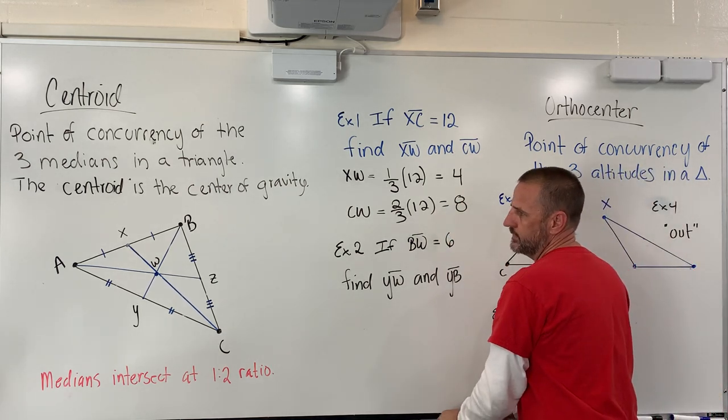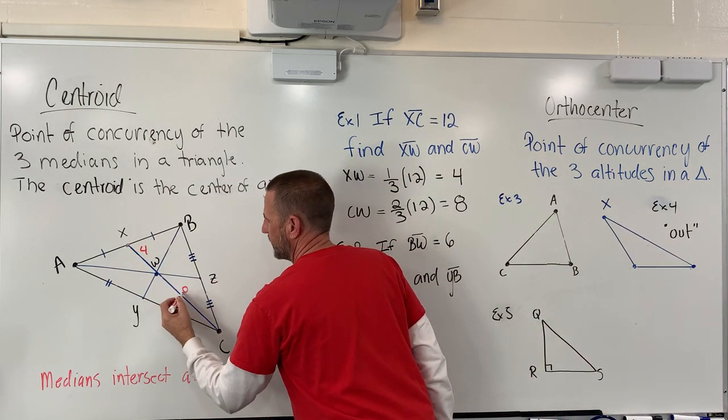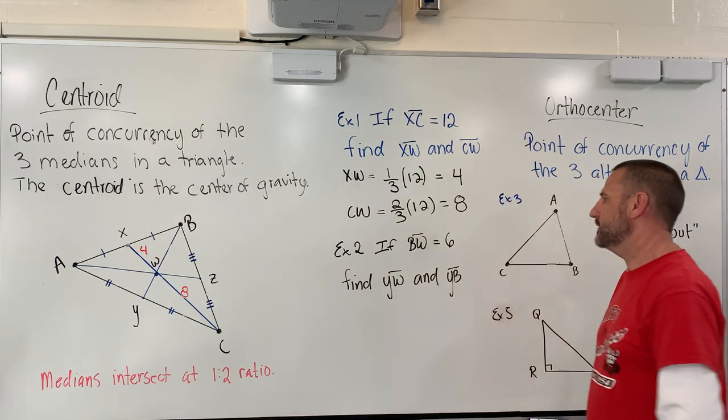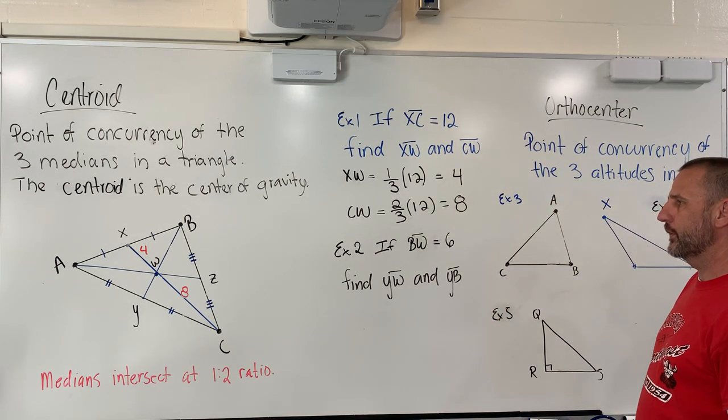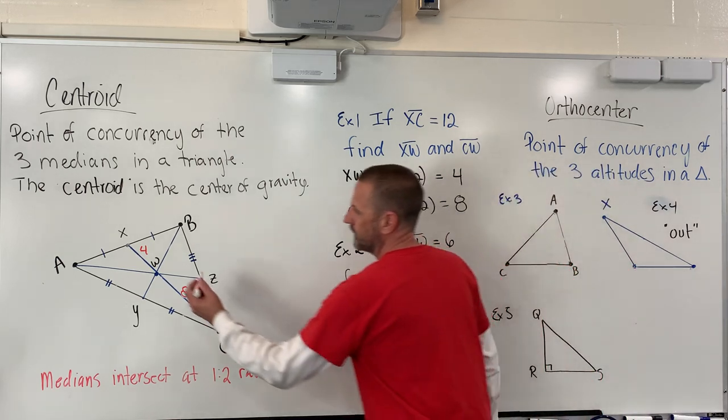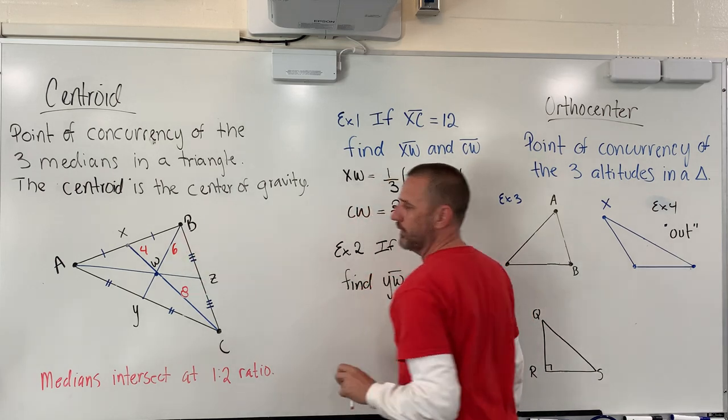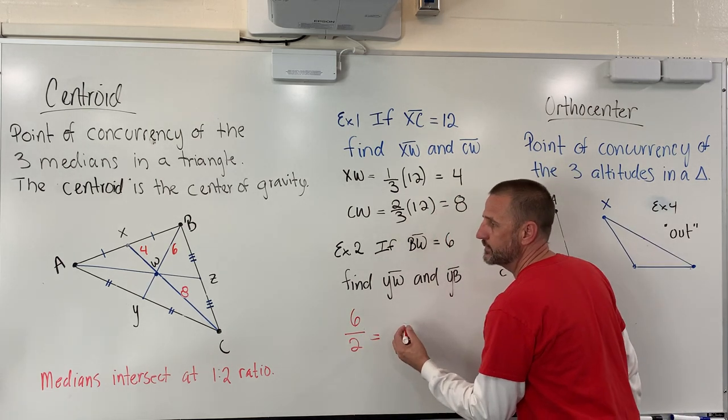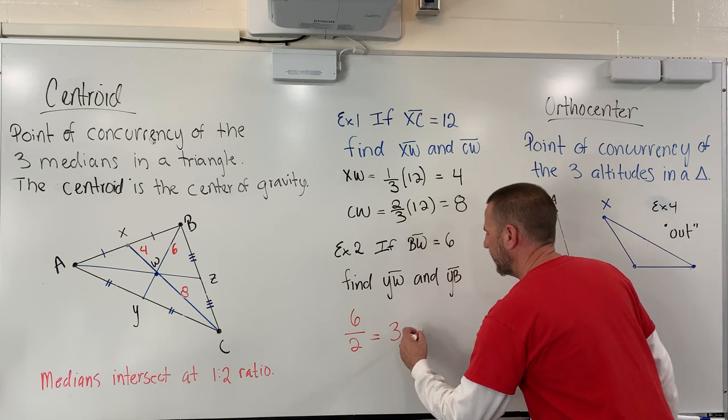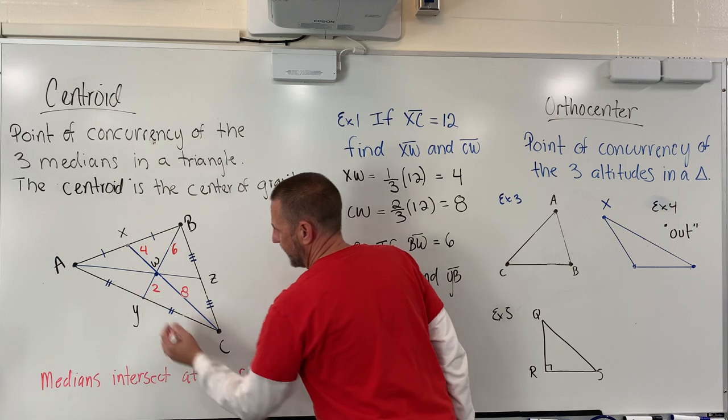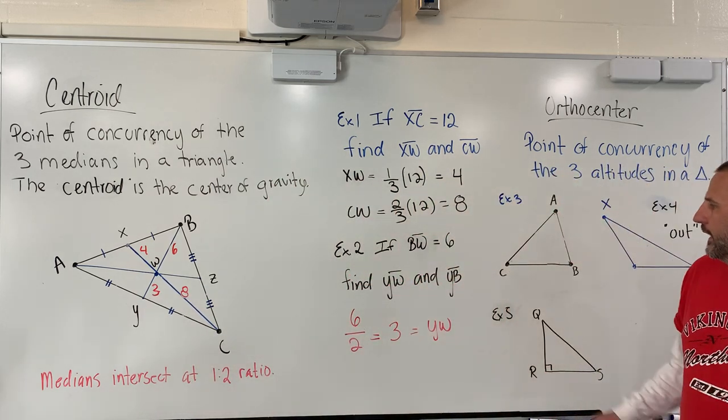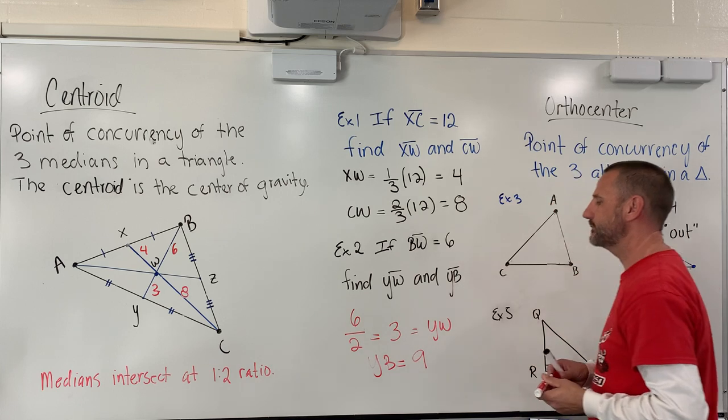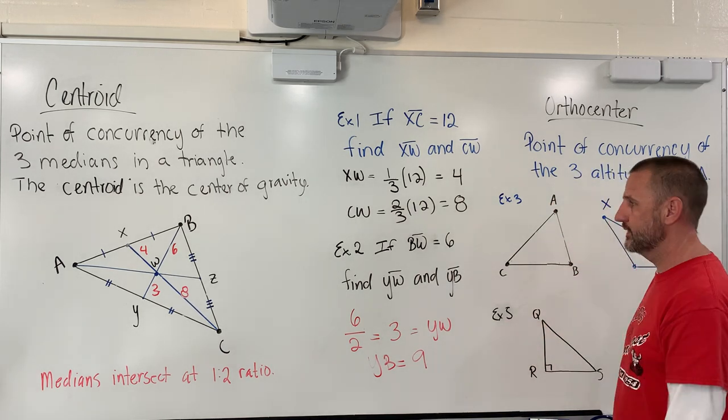So now I know that the distance from X to W is four, whereas C to W is eight. And now you can see that one to two ratio. This one is always double that one. So let's do that again, but this time let's work backwards. For example, on this one, I'm going to tell you that BW is equal to six. Well, remember this has to be two parts. This is one part. So if you take six and split it and divide it in half, six divided by two tells me that the smaller part YW is equal to three. And that fits that ratio of one to two. And then the distance from Y to B would be the whole thing. So Y to B would have to be three plus six, which is nine. A third of nine is three and two thirds of nine is six. So that fits our ratio.